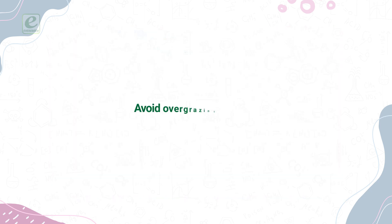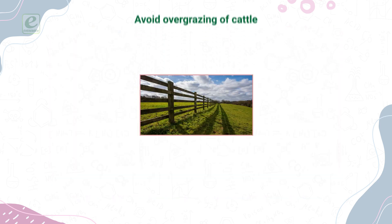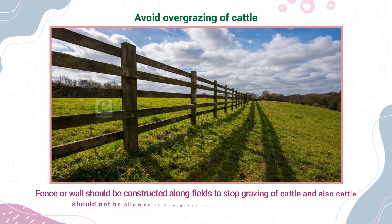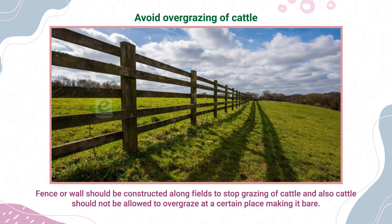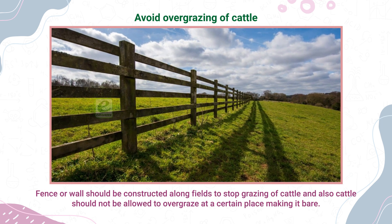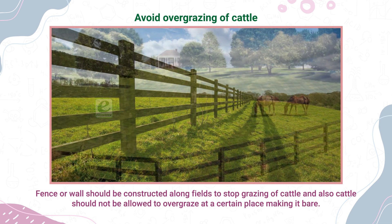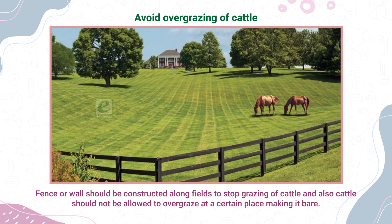Avoid overgrazing of cattle. Fences or walls should be constructed along fields to stop grazing of cattle, and cattle should not be allowed to overgraze at a certain place, making it bare.